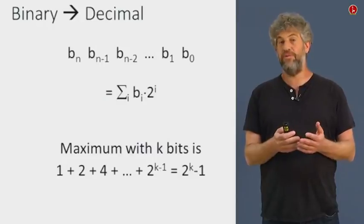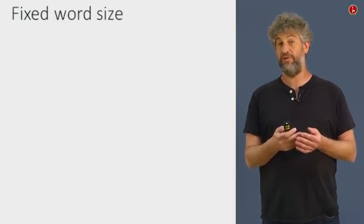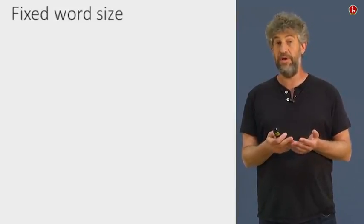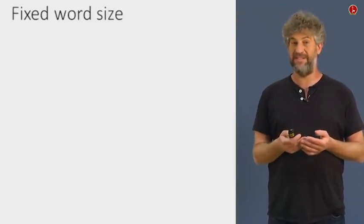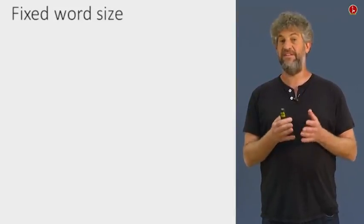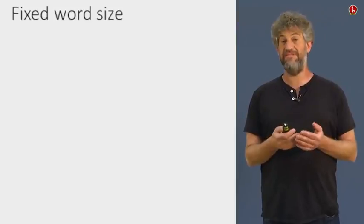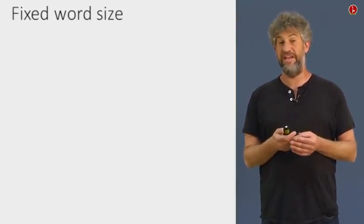Now, so far we assumed we have an arbitrary number of bits that we can use to represent. And of course, if we want to represent an arbitrarily long number, we will need an arbitrary number of bits. In computers, you usually have a fixed number of bits that is allocated, and then you will only be able to represent a fixed range of the integer numbers.